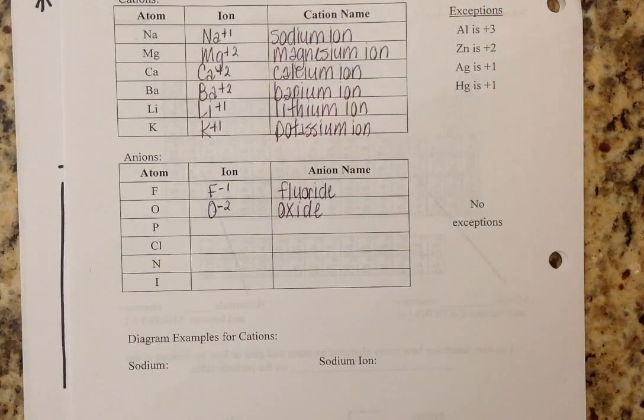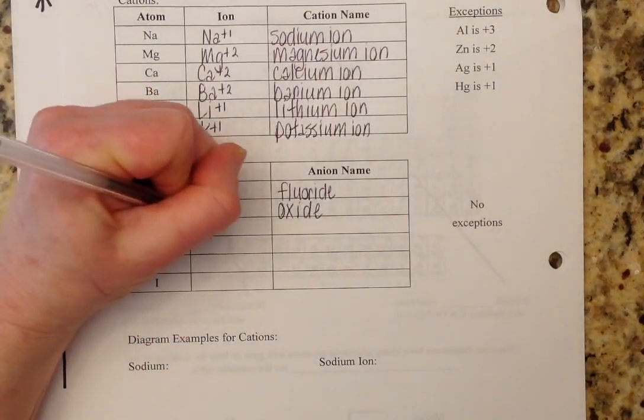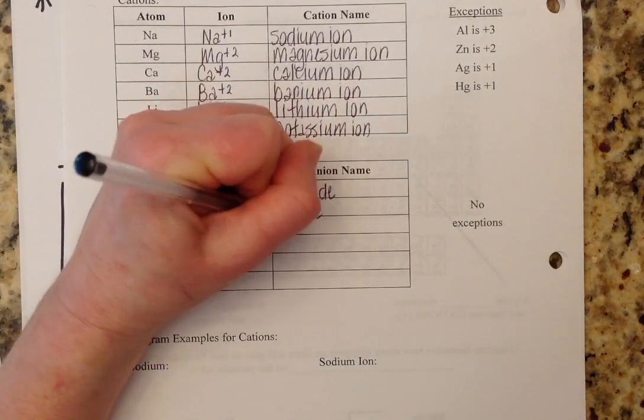Phosphorus is over here in the negative three column. So phosphorus has a negative three charge, and phosphorus will turn into phosphide.